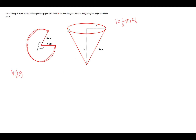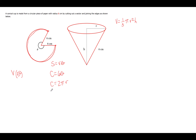The circumference of this face will be this arc length. The formula for arc length is s equals r theta, where theta is expressed in radians. So that arc length will be the circumference of the base of the cone and it will be 6 theta. We also know that for a circle, c equals 2 pi r. So we set these two things equal: 6 theta equals 2 pi r.